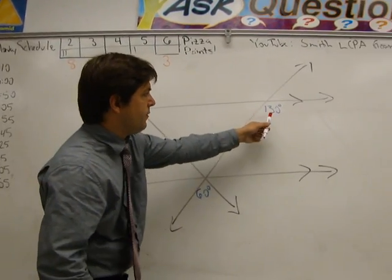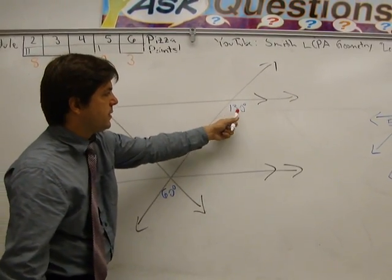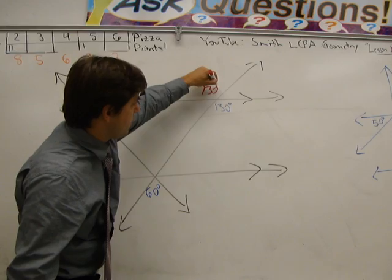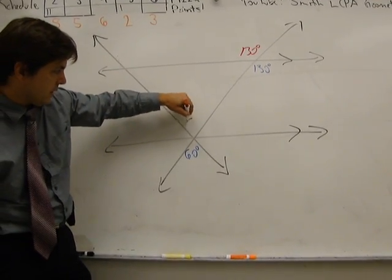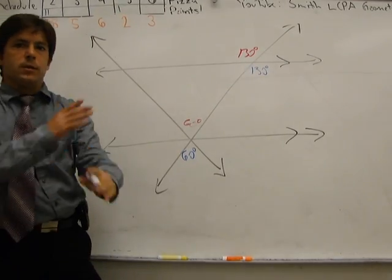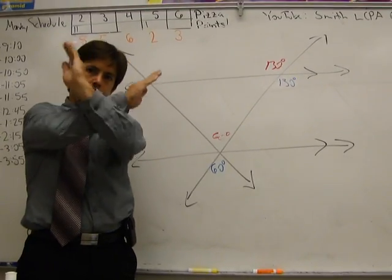Vertical angles are super easy. Vertical angles are the angles that are across from each other. So if this one's 130, this one will also be 130. If this one's 60, the one across right here will also be 60. It works just like scissors. The ones across from each other are the same.